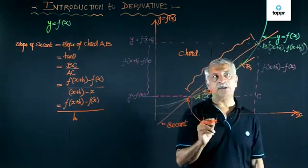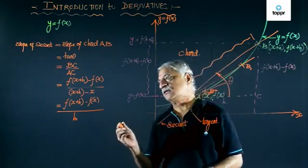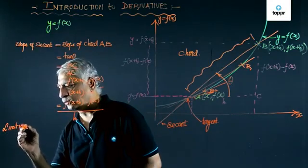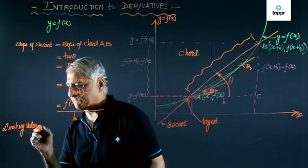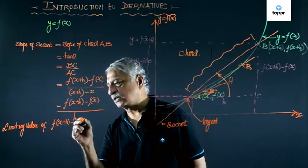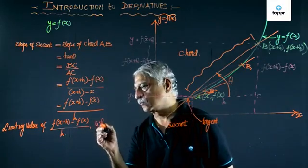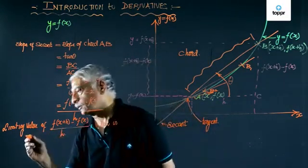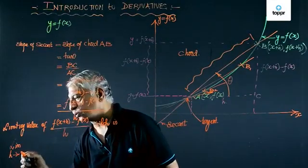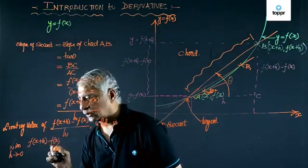Now, I am not able to merge B with A. So in that condition, we say let us take the limiting value. So the limiting value of f of x plus h minus f of x upon h, which is limit as h tends to 0, f of x plus h minus f of x upon h.